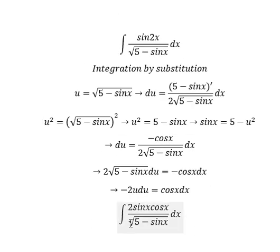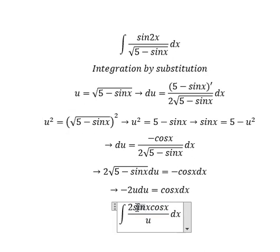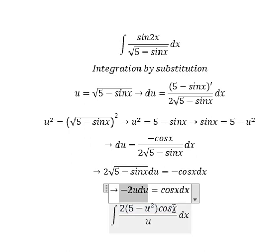The square root, that is u. Cos x dx, we change for negative two u du.